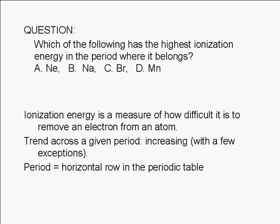A period refers to a horizontal row in the periodic table. Since the trend increases from left to right, the rightmost element would have the highest ionization energy. That would be the noble gases.